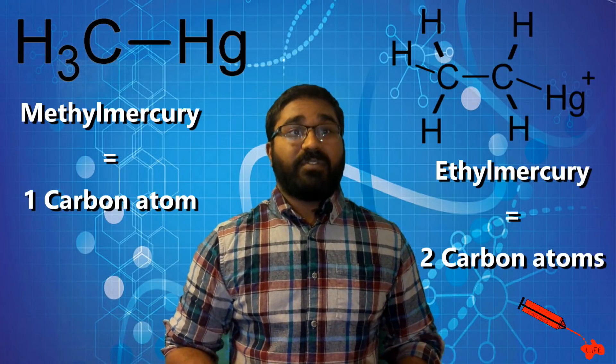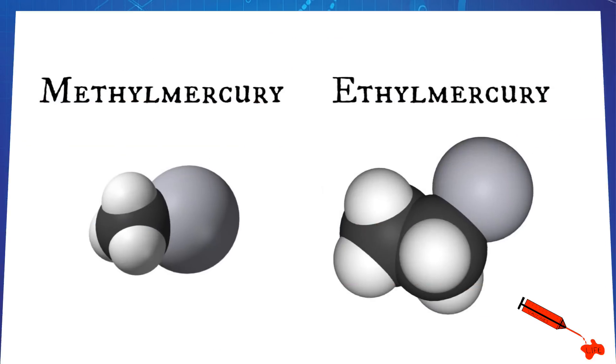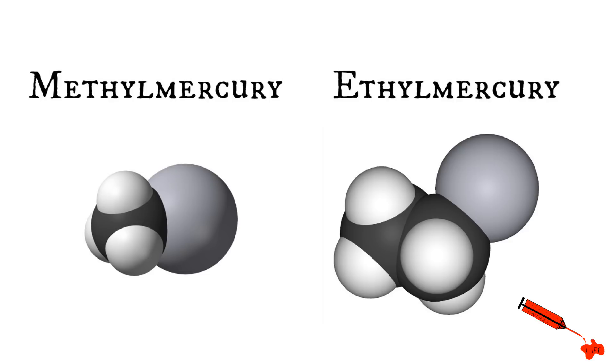This makes the ethyl group effectively double in size to that of a methyl group. So while methylmercury can cross the blood-brain barrier and enter the brain causing damage, ethyl mercury is much too large to cross the blood-brain barrier. This means that ethyl mercury is harmlessly excreted from the body in the patient's urine.